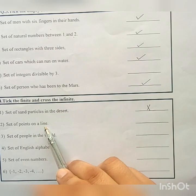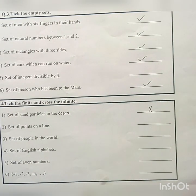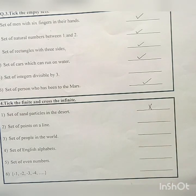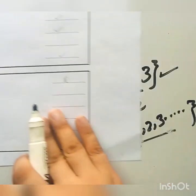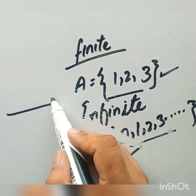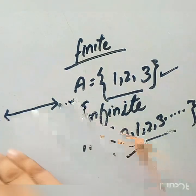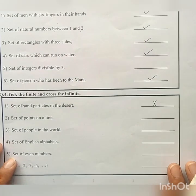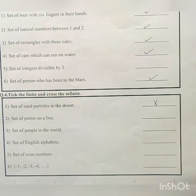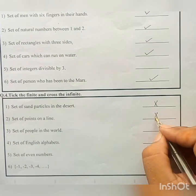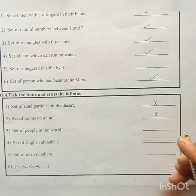Set of points on line. Set of points on a line are infinite. Like, look, this is a line. A line itself is infinite, which has no end point. So the number of points on a line are also infinite. So it will be crossed out.